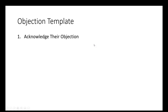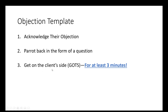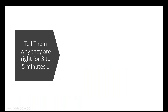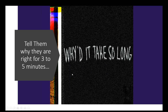What if we didn't do that, but instead we acknowledged the objection, paired it back in the form of a question, got on the client's side for at least three minutes, used the word 'and' instead of 'but' — and then just simply did it the way you always did it? You could even use the word 'but.' You could even screw up step four and say 'but,' then tell them why they're right for three minutes, and then overcome the objection the way you always have. Why do we need to go for three to five minutes? Why do we take so long there?